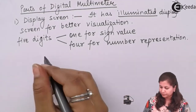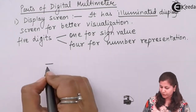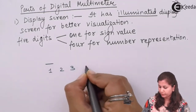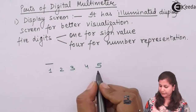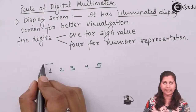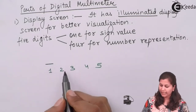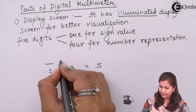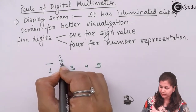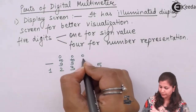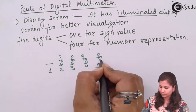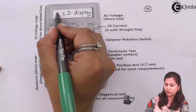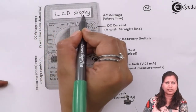The second, third, fourth, and fifth — these remaining four digits are for the number, and they can have any value from zero to nine. So the display screen or the LCD screen of the multimeter is going to have a five-digit display over it.